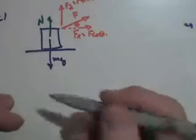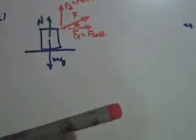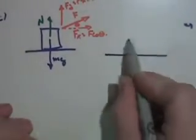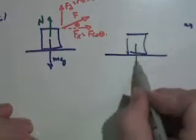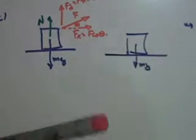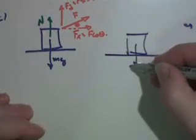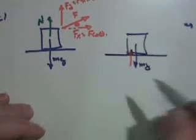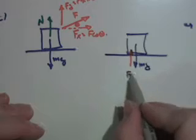Which actually makes it lighter, and so the weight component is less. So the weight component down would be mg, but we get to reduce it by the upward component that's pulling it upwards, which would be f sine theta.